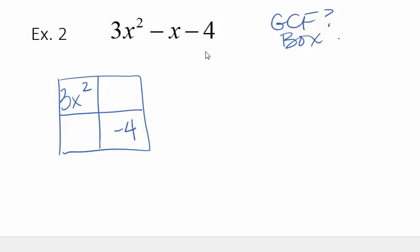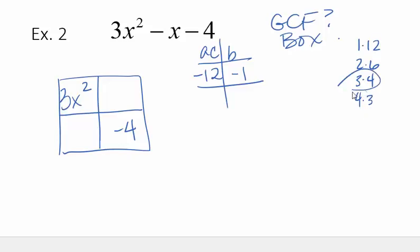A times C would give me negative 12. B is a negative 1. So I think of my factors of 12. 1 times 12, 2 times 6, 3 times 4. The difference of 1 would come with the 4 and the 3. I need a negative 1, so I need negative 4 and a positive 3, and that would multiply to negative 12. So I'm going to put negative 4x here, and a 3x in the bottom left. Now I do greatest common factor.